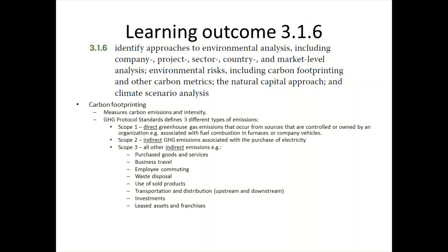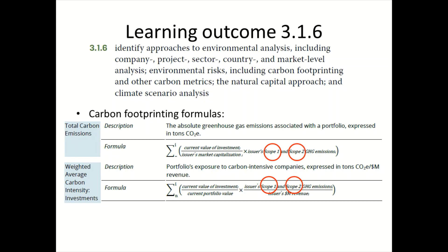For financial firms — say banks or insurance companies — they will not produce many scope one and two emissions. But depending on the investment or loan book, scope three emissions can be material. This brings us to carbon footprinting formulas. Please remember these two formulas: total carbon emissions and weighted average carbon intensity, also called WACI.